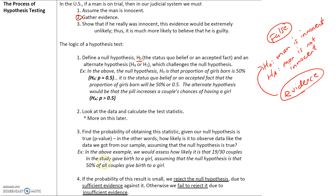In the example with the pill, we would like to assess how likely it is that 19 out of 30 couples gave birth to a girl, assuming the null hypothesis that 50% of all couples give birth to a girl. This concept is somewhat confusing and we will talk much more about it in class.